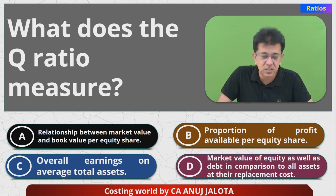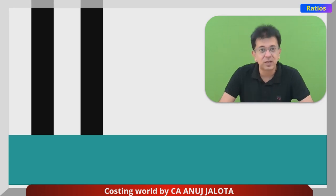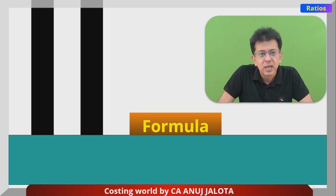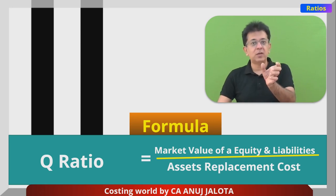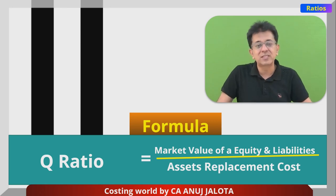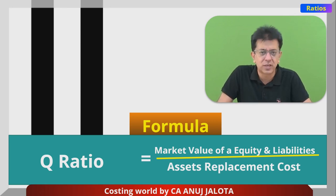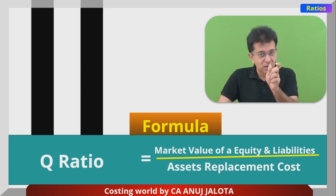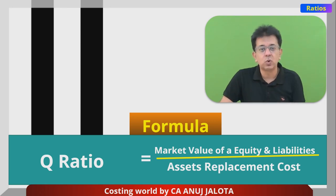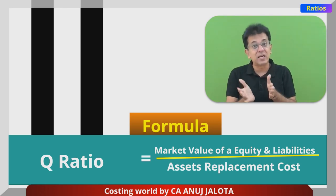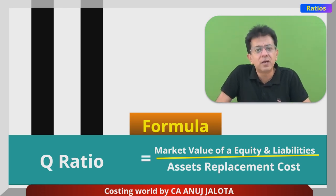The Q ratio is calculated as follows: market value of equity plus liabilities, divided by asset replacement cost. For the numerator — say you have issued 1 lakh equity shares with a face value of 10 rupees but trading at 50 rupees on the stock exchange. So in the numerator you take: number of shares issued multiplied by market price, say 50 rupees. Similarly for liabilities — if debentures are traded on the stock exchange, take that market value; if not, take the book value.